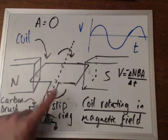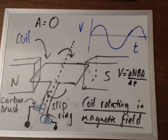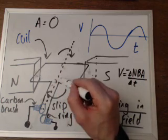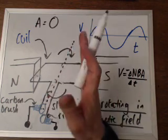So the area at the moment is not there. And as it turns through 90 degrees, it'll suddenly have a maximum area facing perpendicular to it.